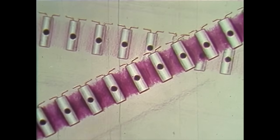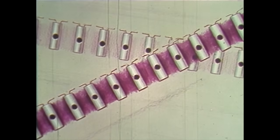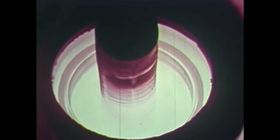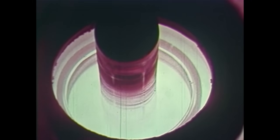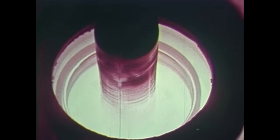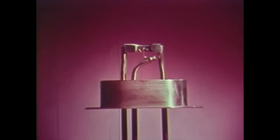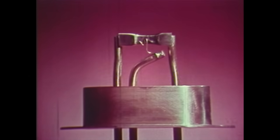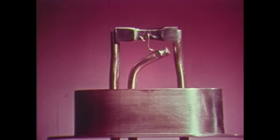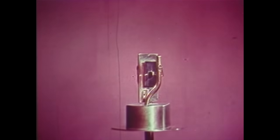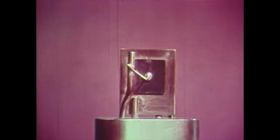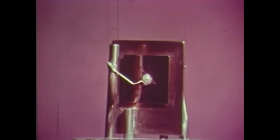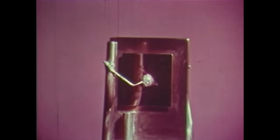The point contact transistor was the first production line model. Further understanding and control led to the growing of single crystals of germanium, and made possible William Shockley's concept of a junction transistor. This was in 1951. A few years later, the alloy transistor was developed. The industry was now in a period of substantial growth, but more work lay ahead.